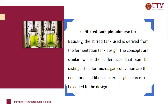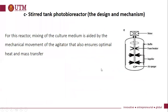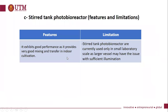The third type is the stirred tank photobioreactor. The stirred tank design differs from the illumination tank design, but the concepts are similar. The difference for microalgae cultivation is the need for additional external light sources to be added to the design. Although this reactor has a low surface area to volume ratio that reduces microalgae photosynthetic efficiency, it provides very good mixing and mass transfer for indoor microalgae cultivation. The limitation is that it is only suitable for small-scale use.